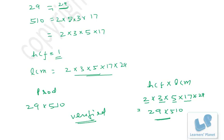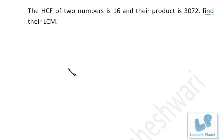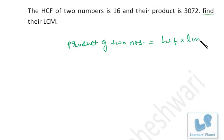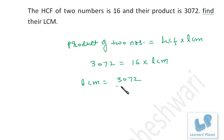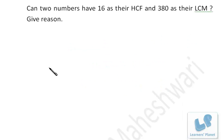Now an application problem: the HCF of two numbers is 16 and their product is 3072. Find their LCM. We know that the product of two numbers equals their HCF × LCM. So 3072 = 16 × LCM, which gives LCM = 3072 ÷ 16 = 192. So LCM is 192.